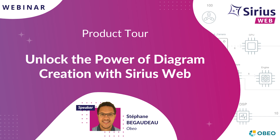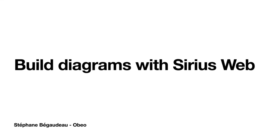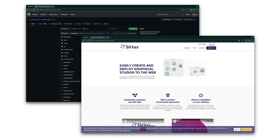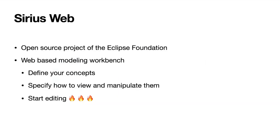Today we will have a look at how you can build great diagrams with SiriusWeb. SiriusWeb is an open source project of the Eclipse Foundation. It allows you to build web-based modeling workbenches where you can define your concepts, specify how they will be displayed, how you can interact with them, and then start editing and manipulating them.